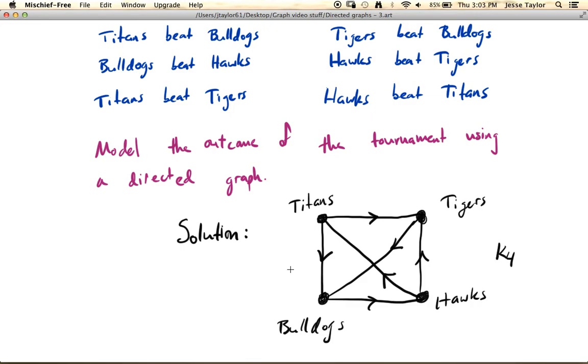Similarly, you can get the idea of a cycle, but there aren't very many directed cycles. I can see at least one here, or two. For example, you can go Titans, Bulldogs, Hawks, Titans, or you can go Tigers to Bulldogs to Hawks to Tigers. I was going to say there was another one, but I don't see that immediately.